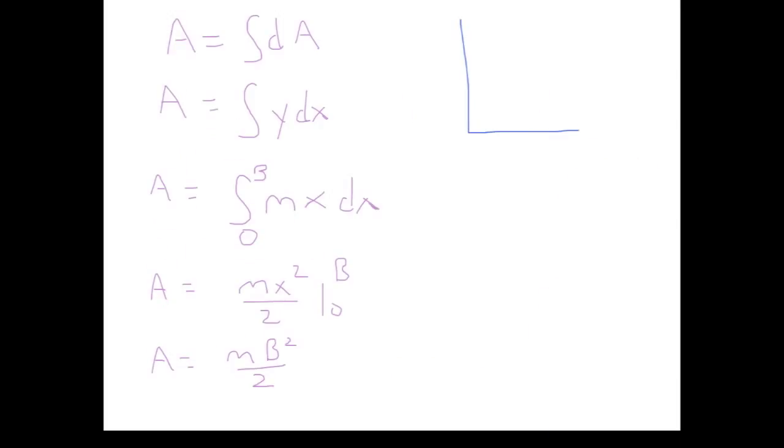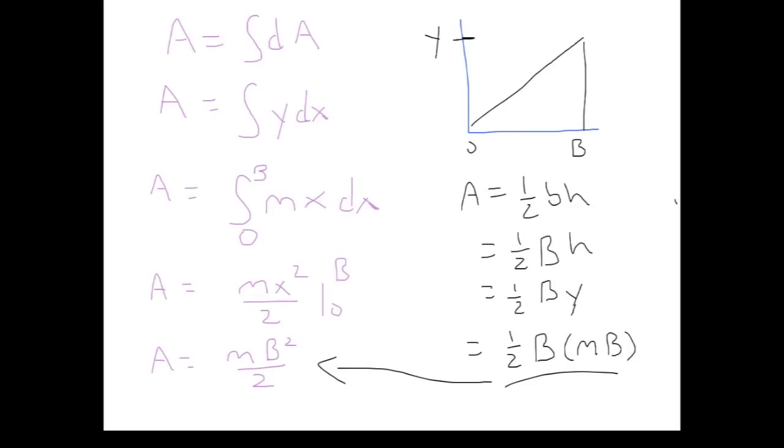Is that right? We know that the macroscopic triangle's area should be one half the base times the height. In my picture, the base is b and the height is y. But, as we saw, y equals mx. And at the maximum height y, x is b. So we do in fact get the expected result.